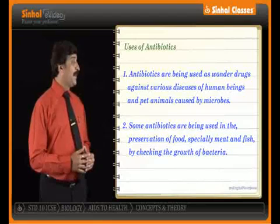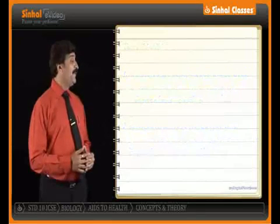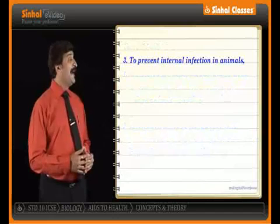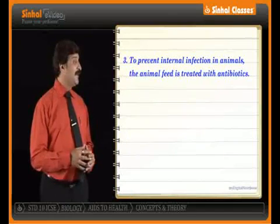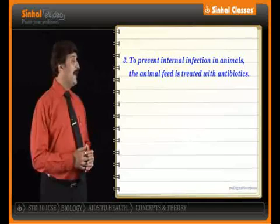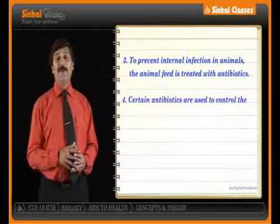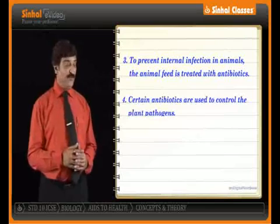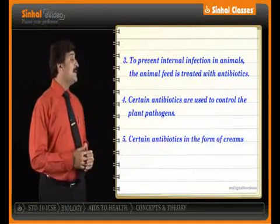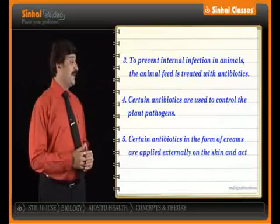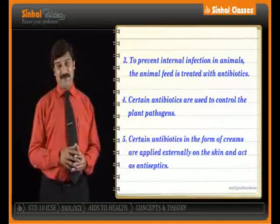To prevent the growth of bacteria, animal feed is treated with antibiotics to prevent internal infection in animals. Certain antibiotics are used to control plant pathogens. Certain antibiotics in the form of creams are applied externally on the skin and they act as antiseptics.